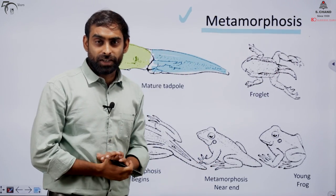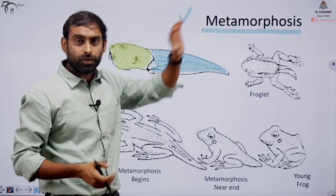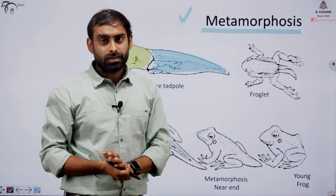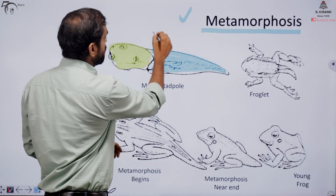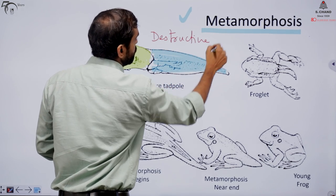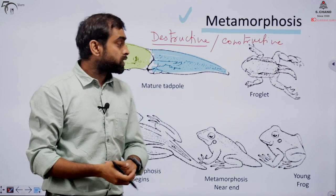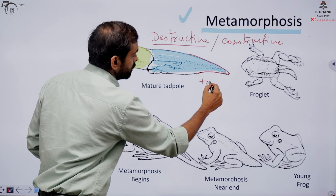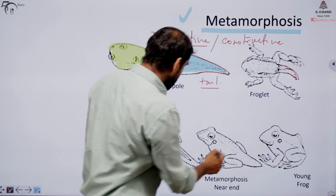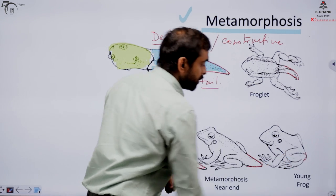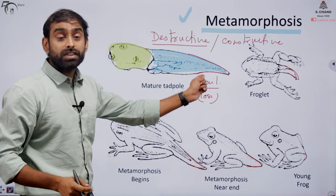Metamorphosis is not seen in all organisms. After embryonic development, the journey from tadpole to young frog is called metamorphosis. During metamorphosis, many changes occur in the frog's body — some changes are destructive and some are constructive. One very important destructive change is the loss of the tail, which is quite prominent in a tadpole and helps it swim. As the tadpole matures into a frog, the tail is completely gone.